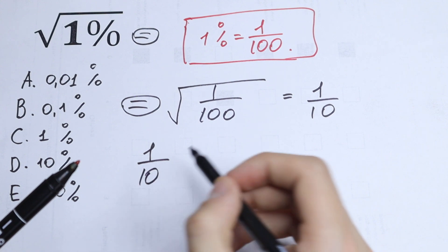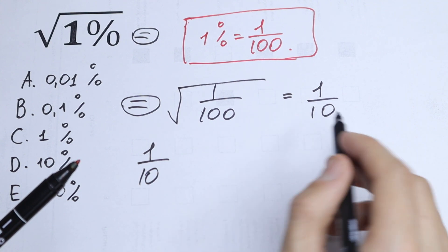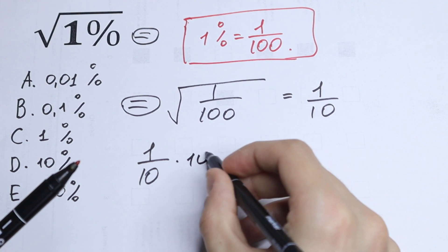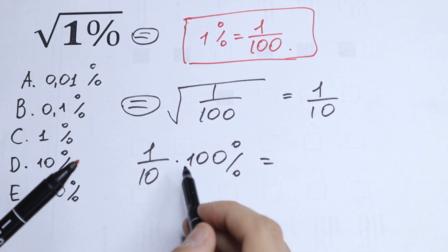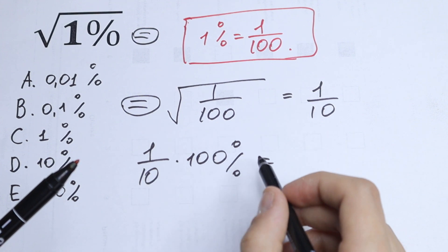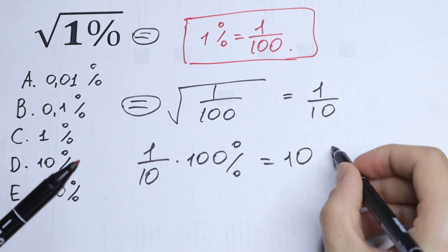Using a little trick here, multiply 1 over 10 by 100%. As a result, the tens cancel out and we get 10 percent.